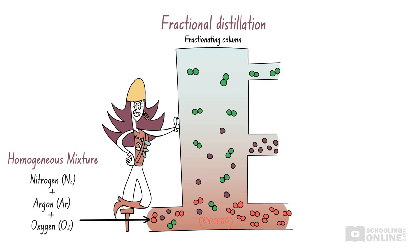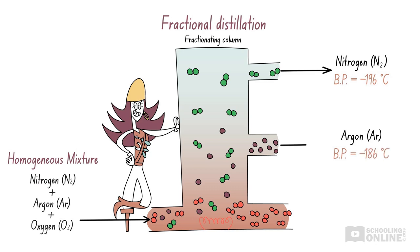As we can see, Long Jane Silver has successfully separated the components of air. She can collect the liquid oxygen from the bottom of the fractionating column and use this to fill up their oxygen tanks. Now the pirates can go diving for treasure.